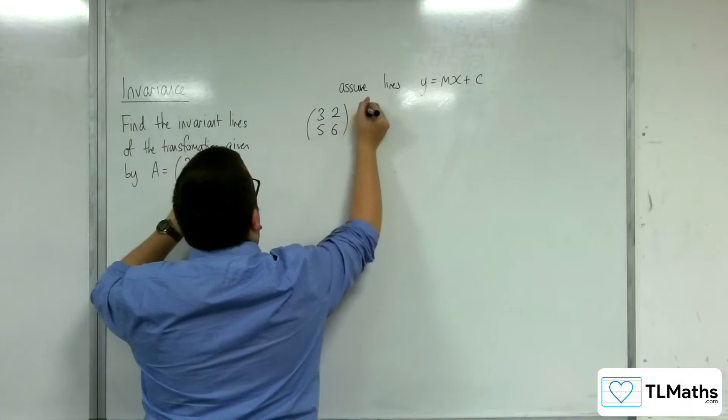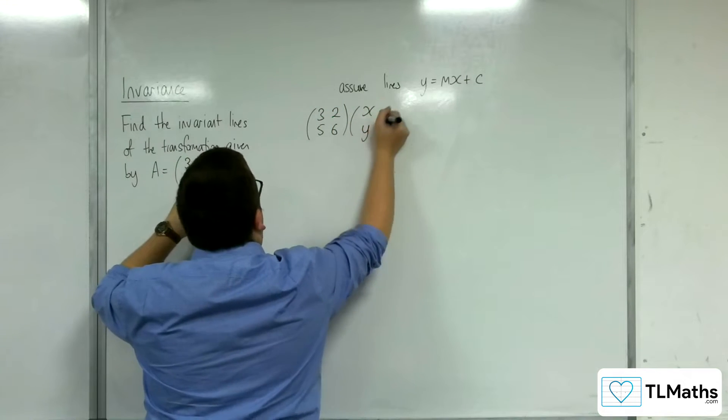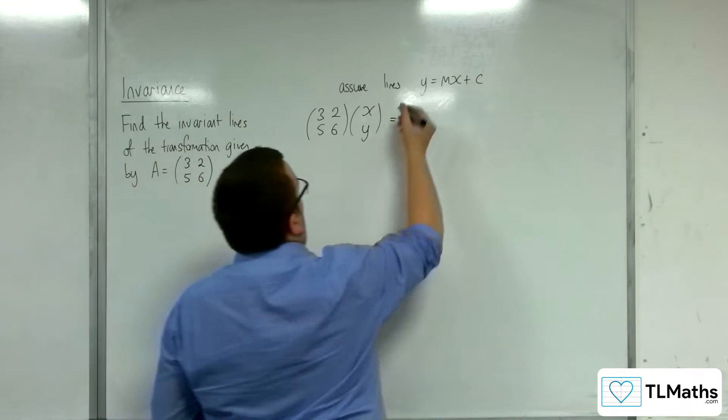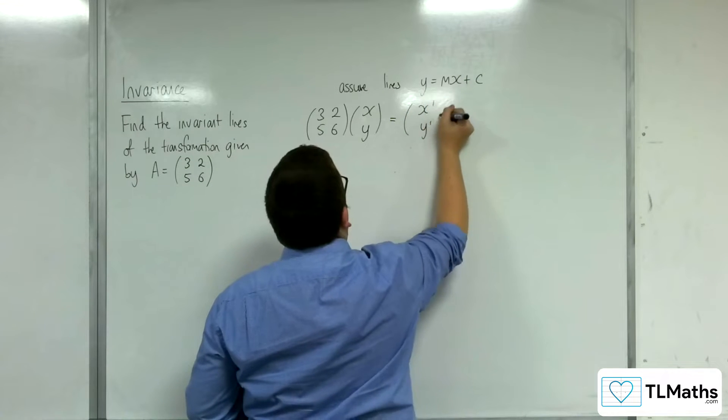5, 6 to a pair of coordinates x, y, they're going to be mapped to another set of coordinates x prime, y prime.